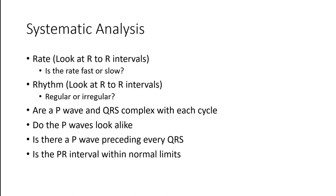Is there a P wave before every QRS complex? If we see a P wave, that's fair to assume it probably started in the SA node — causing atrial depolarization. If it comes before the QRS complex in a subsequent manner, it means the ventricles are being controlled by the SA node. The SA node is setting the pace. That's a good thing.